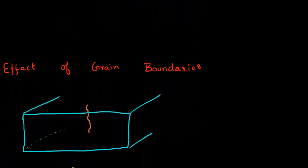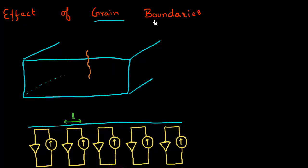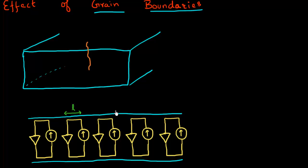That brings me to the next topic: how do grain boundaries affect the performance of the cell? I have drawn a diagram here. Consider the case where I have just one grain boundary in my solar cell, and I want to figure out how it will affect device performance. This grain boundary means I will have higher recombination in that region. I can represent this situation by a distributed model — a 2D cross section of the cell where each small region is depicted as a diode. Each diode is forward biased and conducting current in this direction.